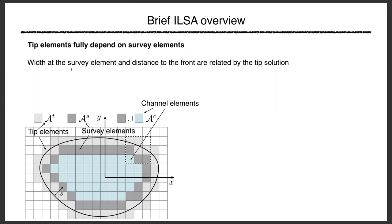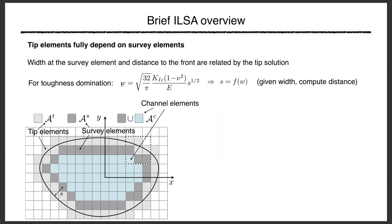Let me talk a little about ILSA, the latest and greatest algorithm for tracking the fracture front. In a two-dimensional planar fracture, the fracture front is shown in black. Tip elements are those partially filled and crossed by the fracture front. The key idea is that the survey elements — those fully open — uniquely define the behavior of the tip elements, so tip elements are not independent variables.